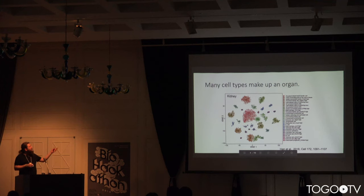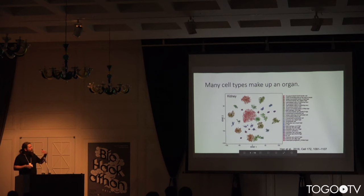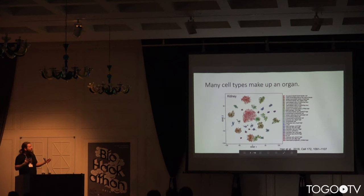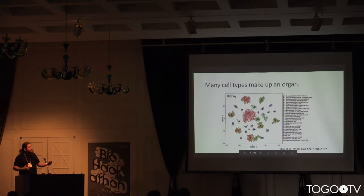With a different organ — the kidney — there are also a lot of cell types, but again different ones and very diverse. You have about 30 different cell types, but this time they're distinct from the previous organ's cell types.